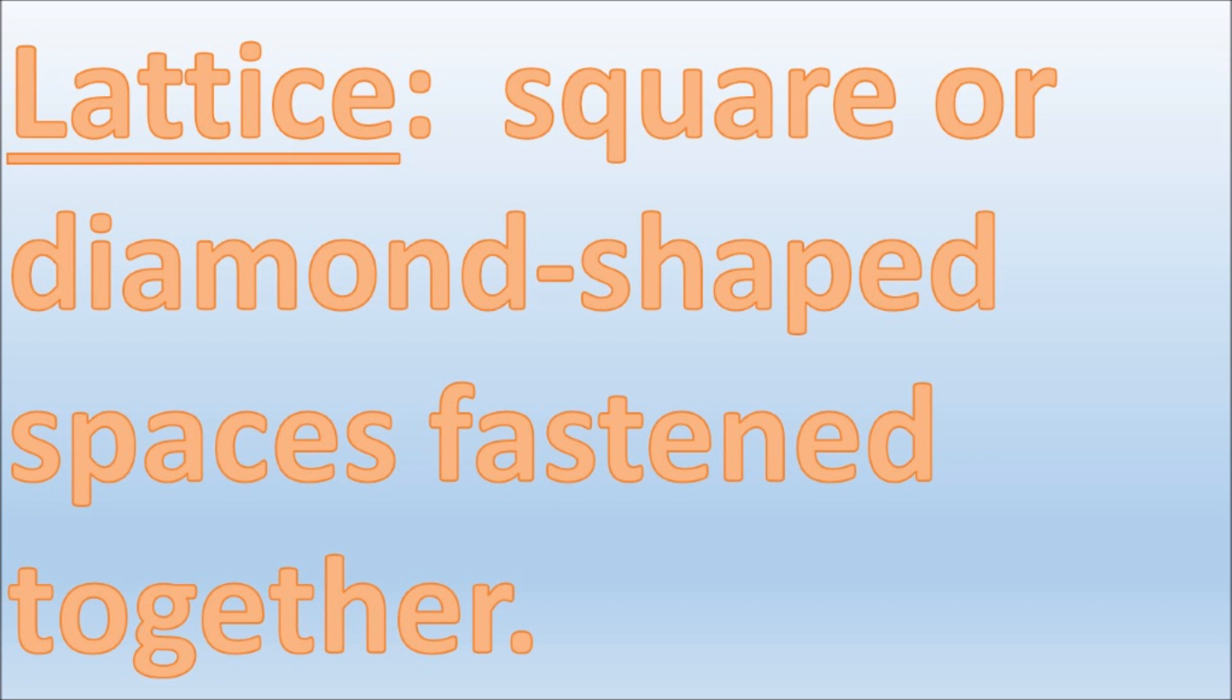Lattice: square or diamond shaped spaces fastened together. Here is a lattice. The bottom corner represents the ones place. The top corner represents the tens place.